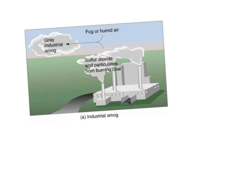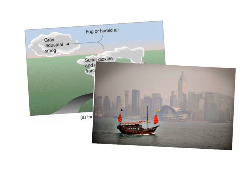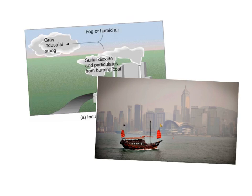The other type of smog is industrial smog, which happens when coal is burned and creates sulfur dioxide and particulates. That sulfur dioxide reacts with humid air, fog, and water in the air to create gray industrial smog. Here's a picture of Hong Kong with this industrial smog from the burning of coal. The haze is a combination of smoke, fog, soot, sulfurous compounds, and water vapor — often where industries are really concentrated.